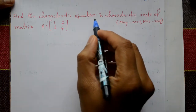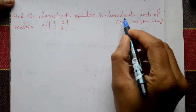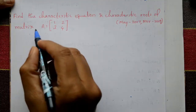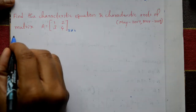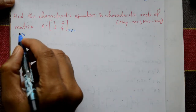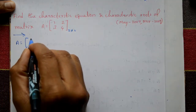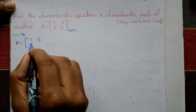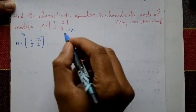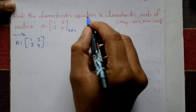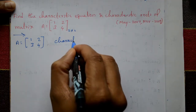Find the characteristic equation and characteristic roots of the matrix. The matrix is given, order is 2×2. The given matrix A is [1, 2; 3, 4]. First, we need to find the characteristic equation.